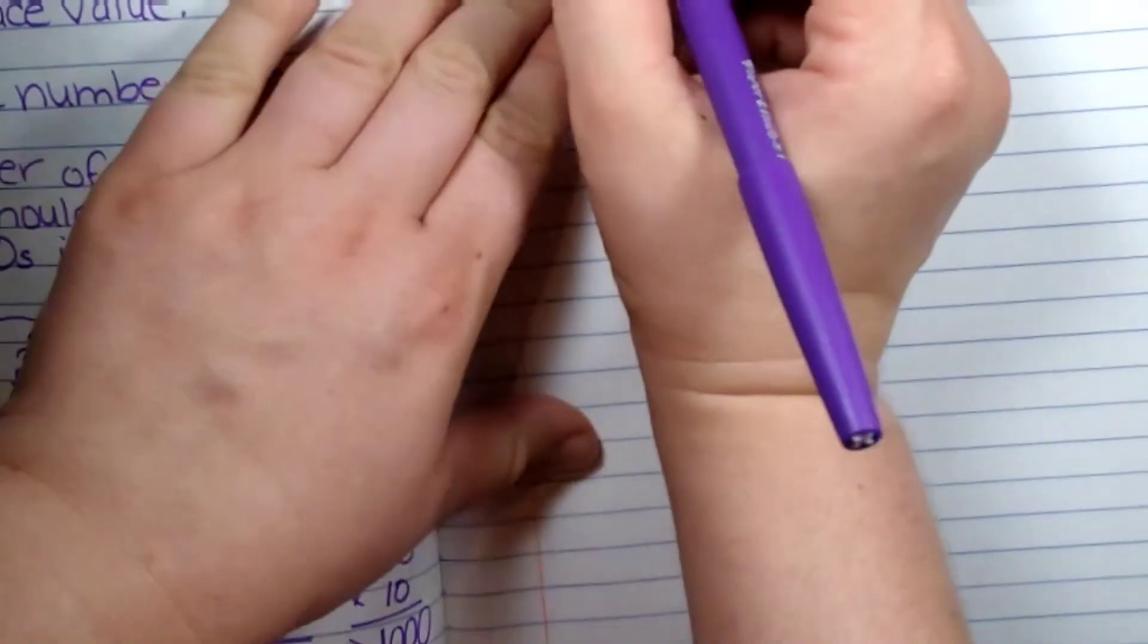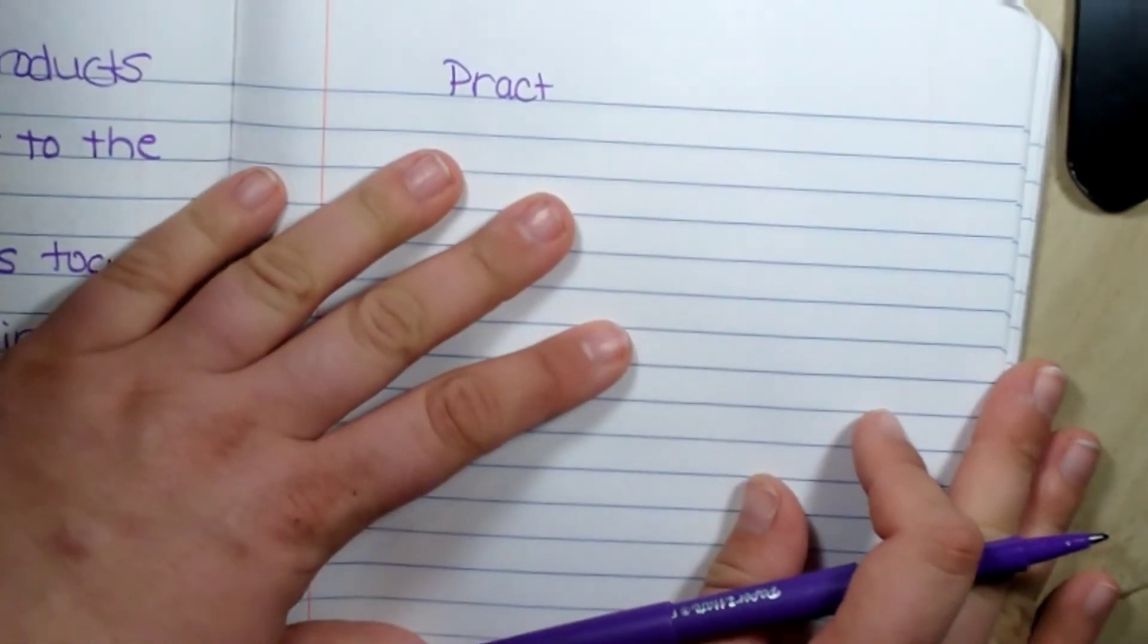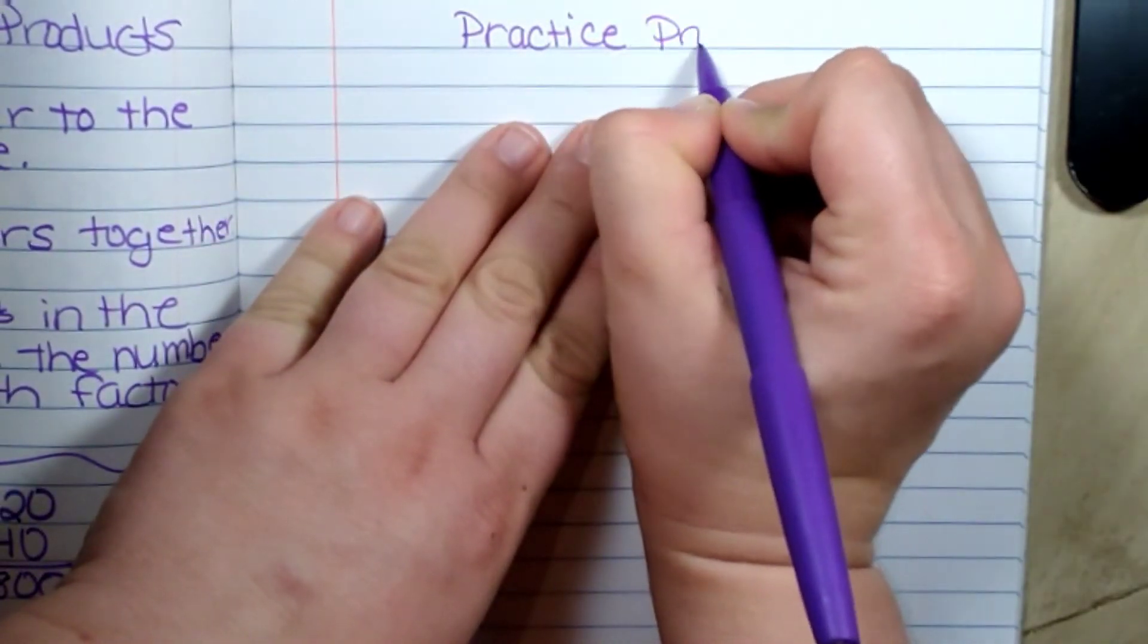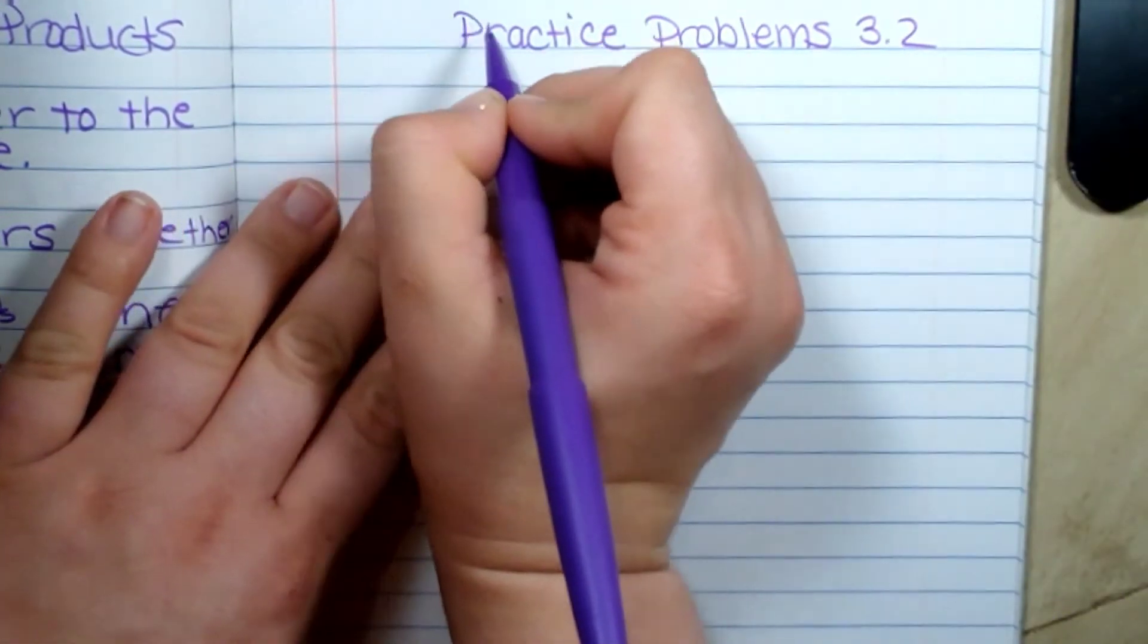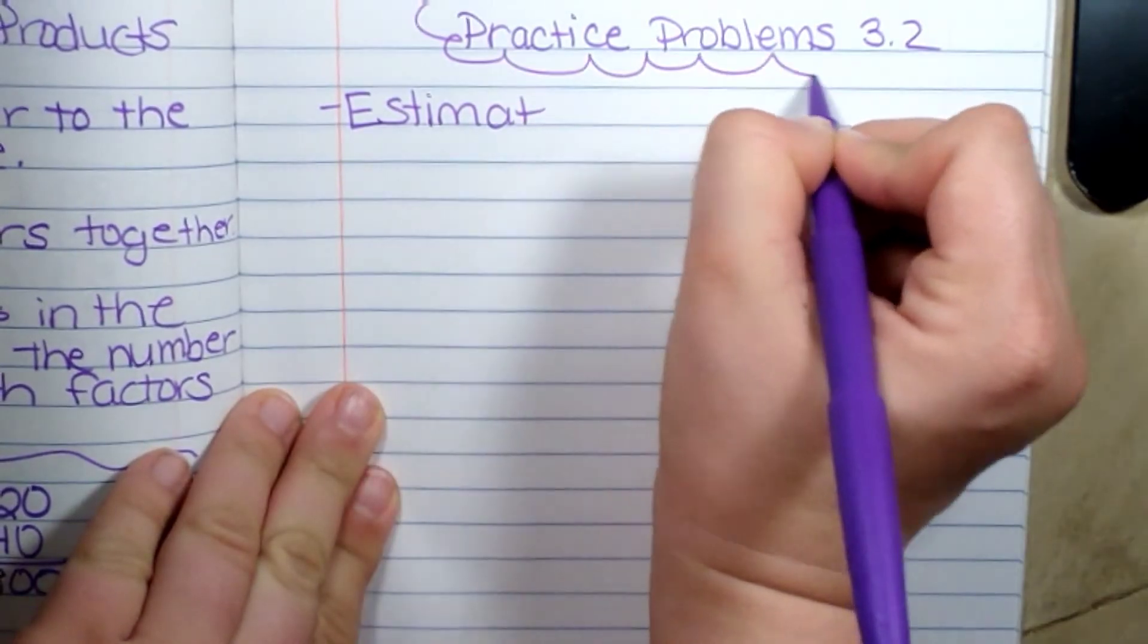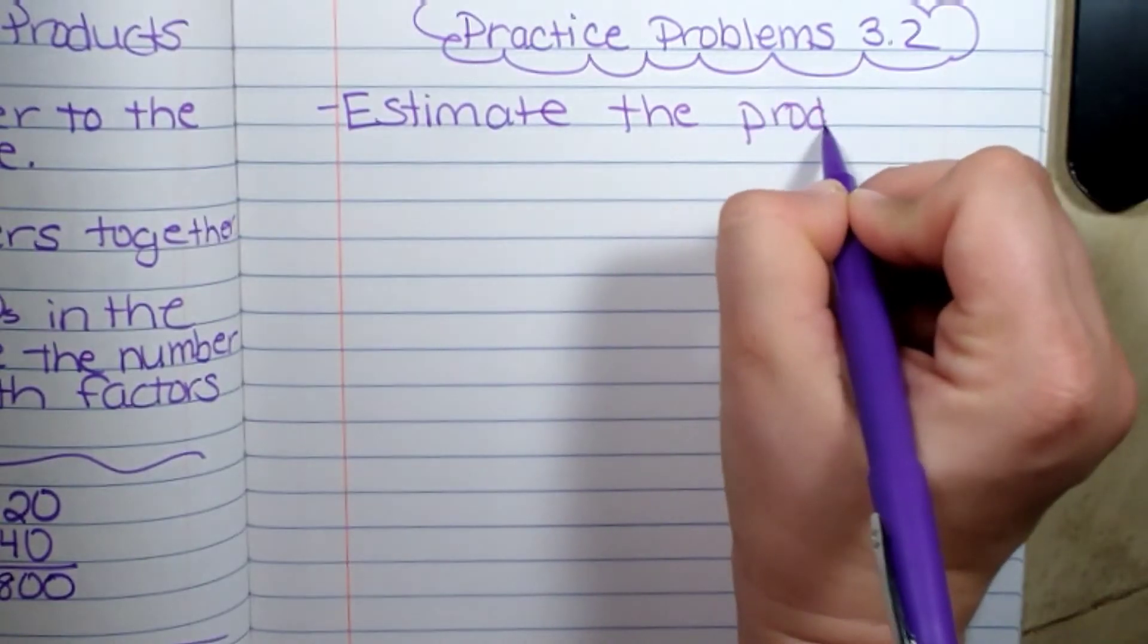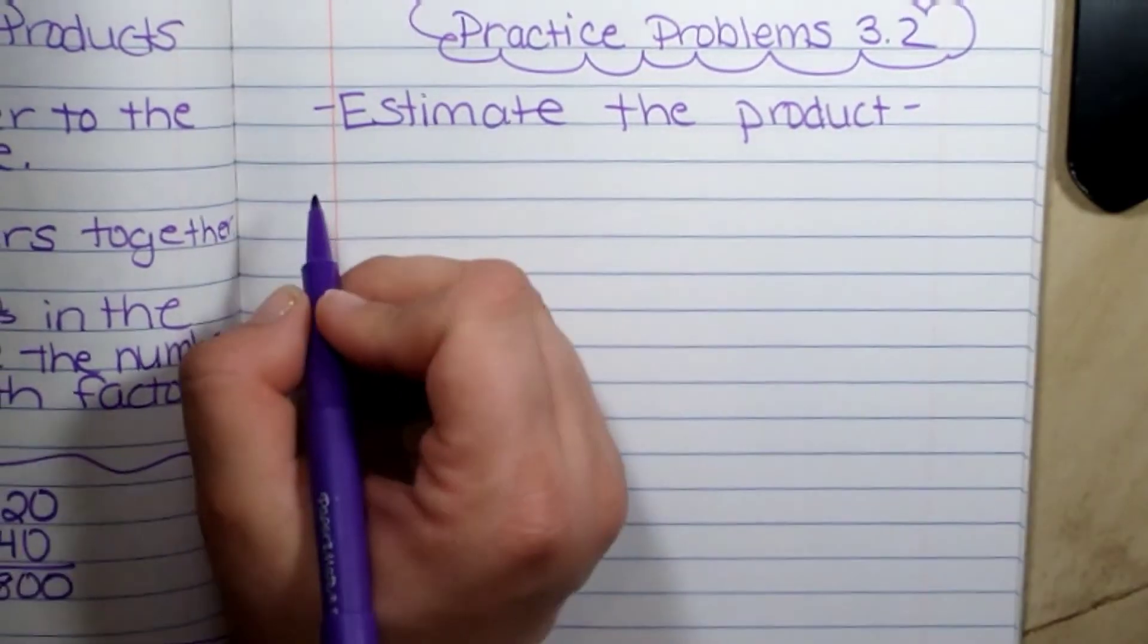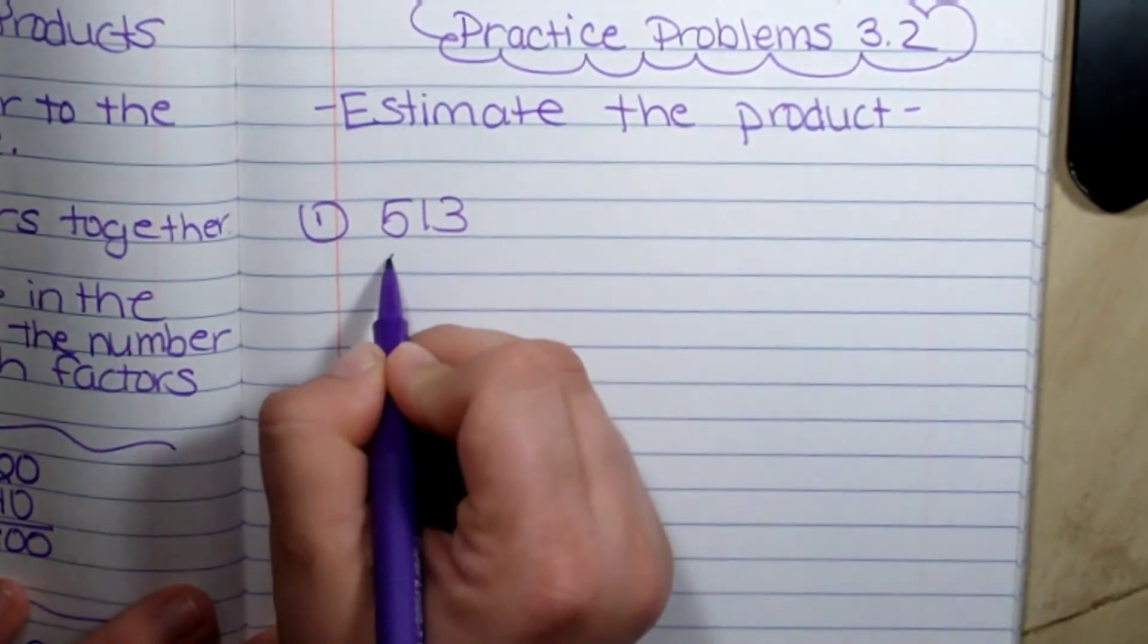Here are your examples that I need you to submit to Schoology. Estimate the product. My first one is—I'm going to give you four. Five hundred and thirteen times nineteen.